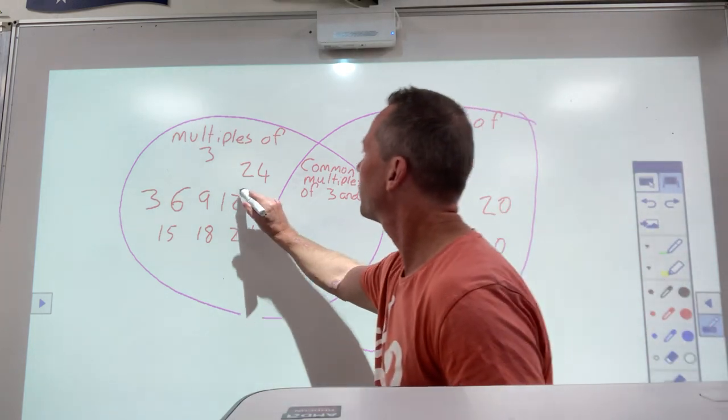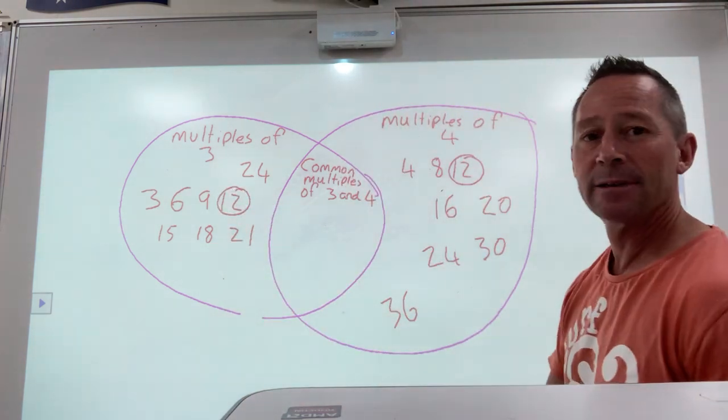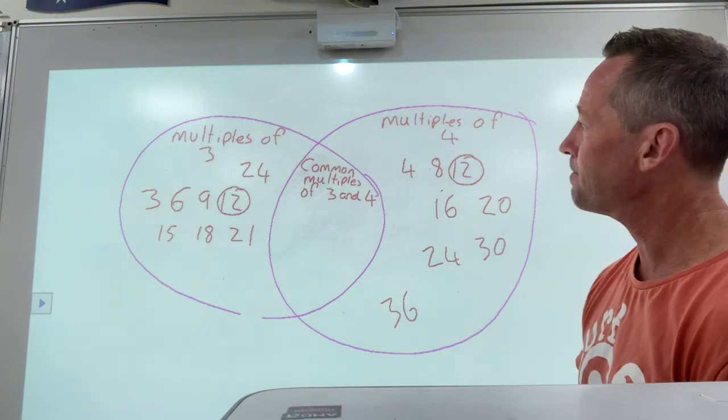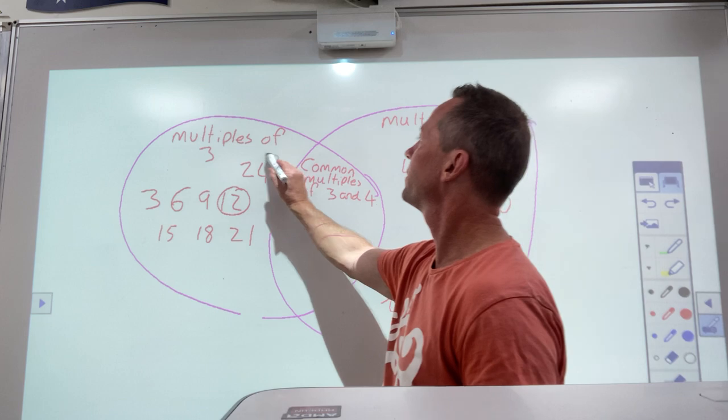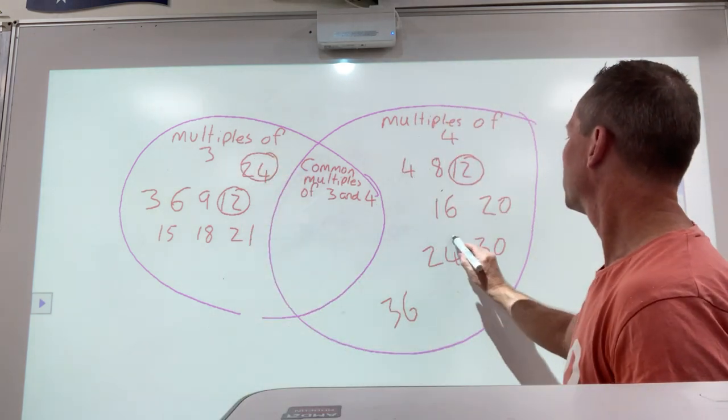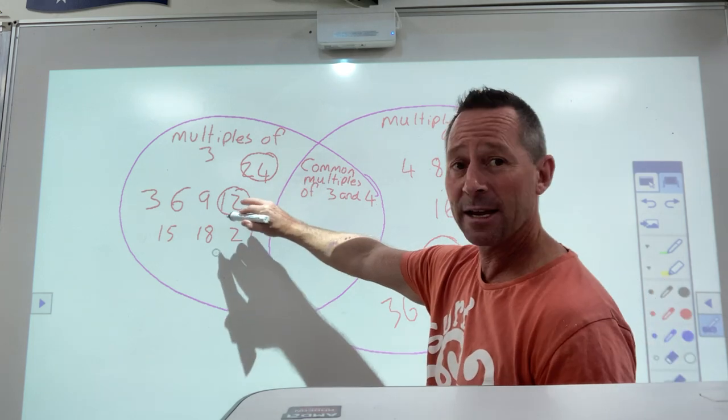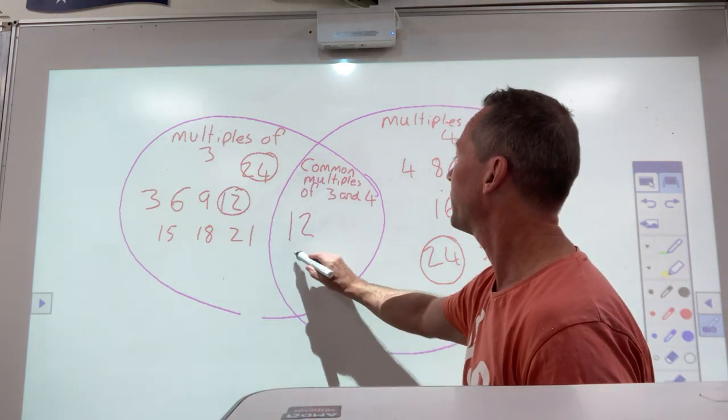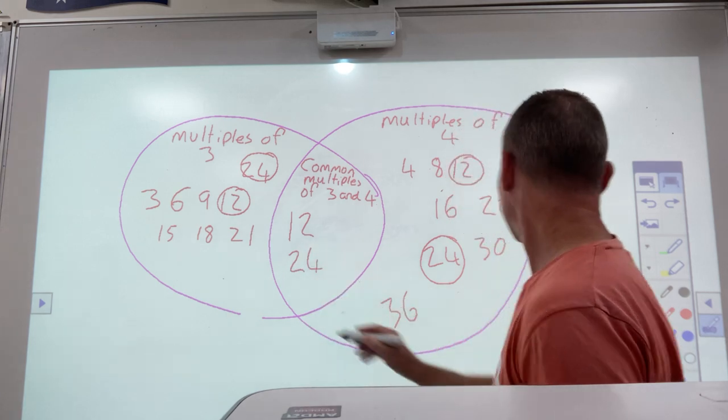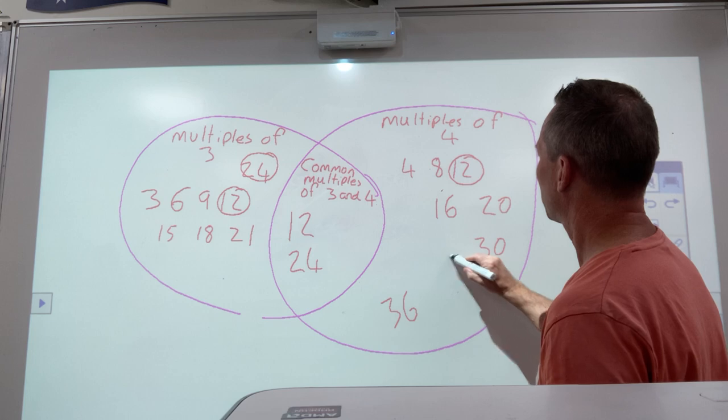So in this case, the multiples of 3 would be 3, 6, 9, 12, 15, 18, 21, 24, and so on. Multiples of 4, so I started 4, 8, 12, 16, 20, 24, 30, 36, and so on. So now I've got to find which ones are common multiples of 3 and 4. Can you spot any in here that multiples of 3 are the same in 4?